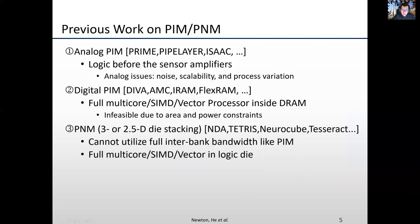Analog PIM places logic before the sense amplifier and suffers from issues of noise, scalability, and process variation. Prior digital PIM work places multicore CPUs or vector processors in DRAM, which is infeasible due to power and area limitations — such processors would occupy most of the die, leaving little room for memory. Processing near memory, on the other hand, cannot utilize the inter-bank bandwidth as PIM can, since data must be transported through the external interface.